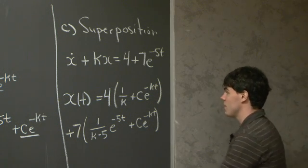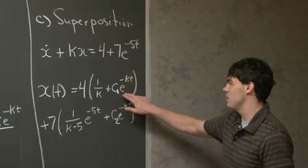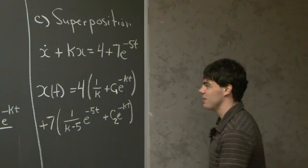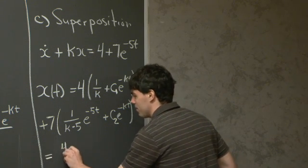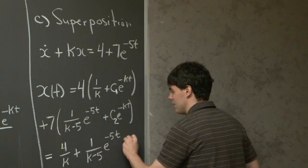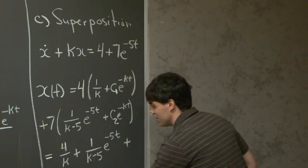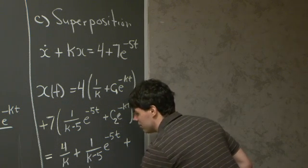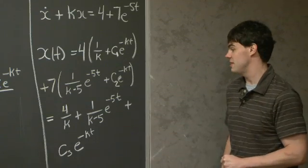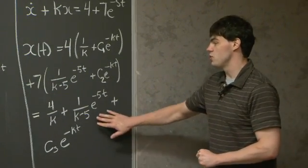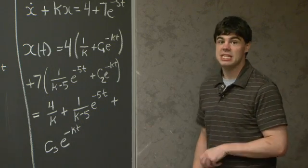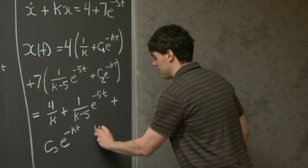Looking at the sum of these terms, I'll denote the two constants as c1 and c2. The combination 4 times c1 plus 7 times c2 is just a new constant c3. So in general the solution becomes 4 over k plus 7 over (k minus 5) times e to the minus 5t plus a constant c times e to the minus kt, where the e to the minus kt terms recombine into a single constant. This is the solution when k is not equal to 5. When k equals 5, we replace the e to the minus 5t particular term with t times e to the minus kt.